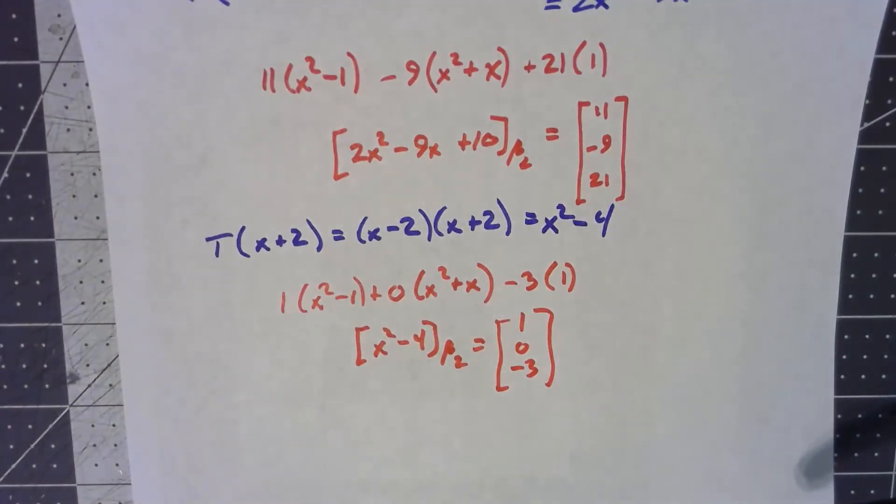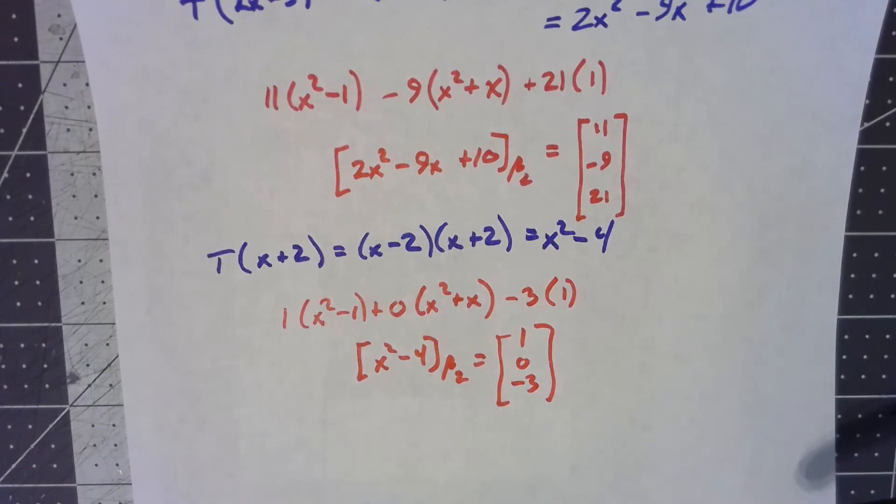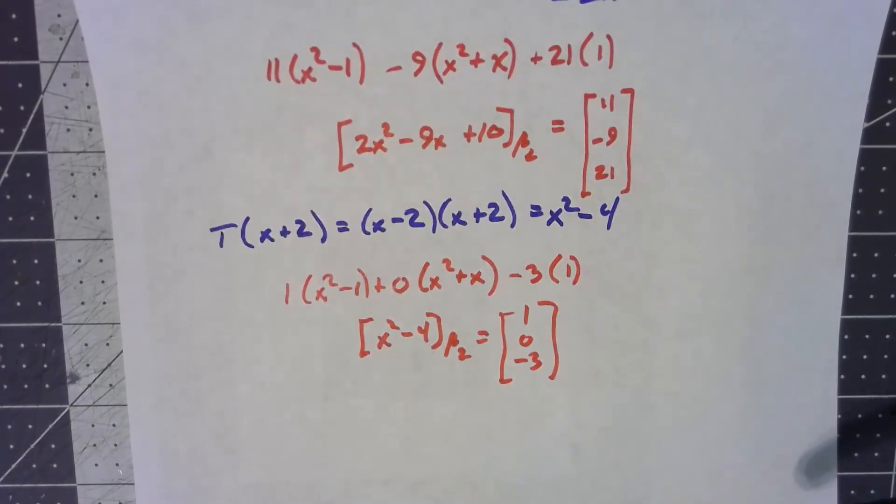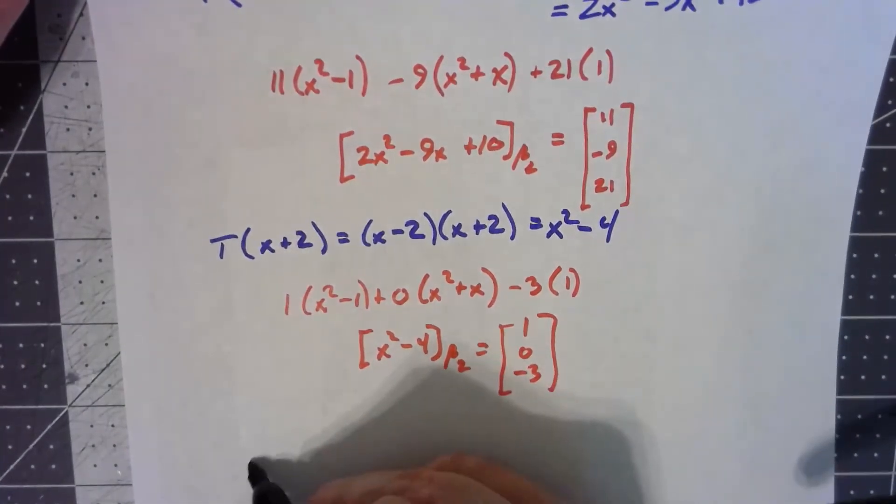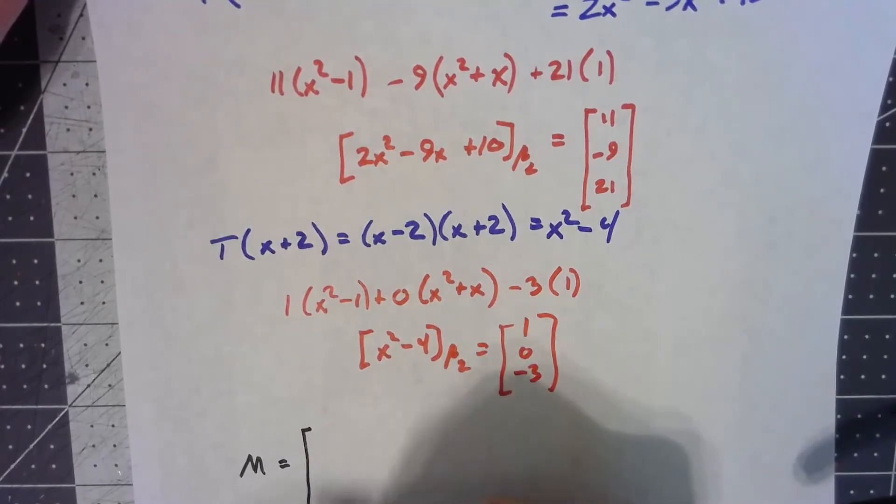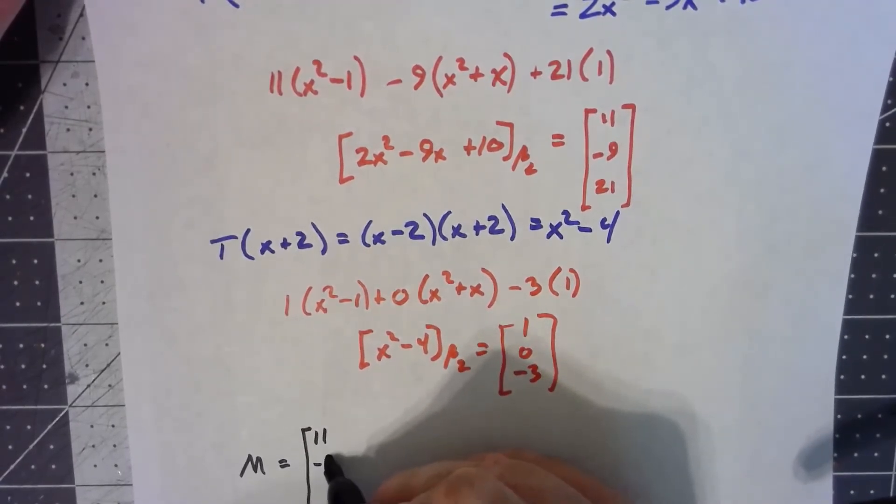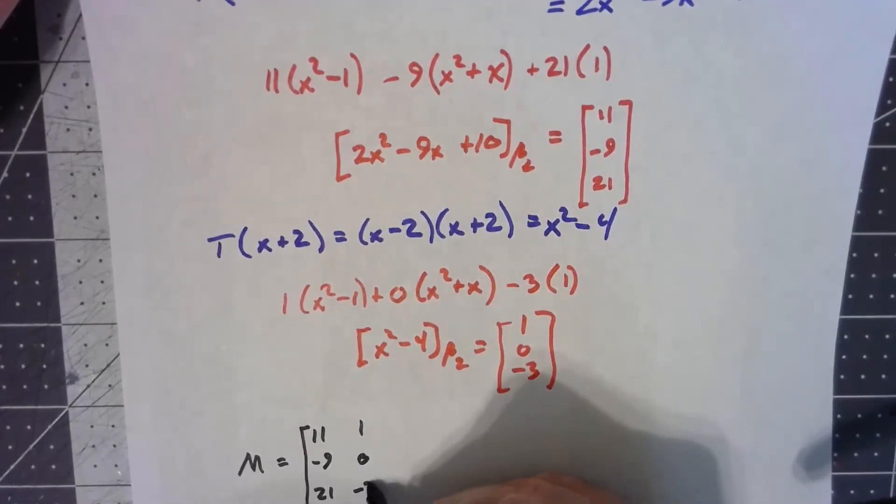Then the whole point of this is that my matrix that takes coordinate vectors for V into coordinate vectors for W that match this linear transformation is slapping these two things as the columns of a matrix. My matrix M is 11, negative 9, 21, 1, 0, negative 3.